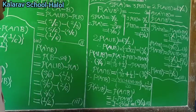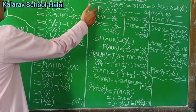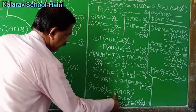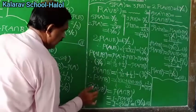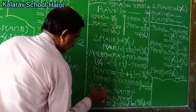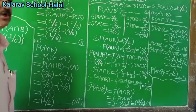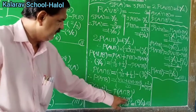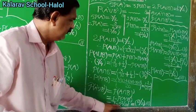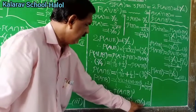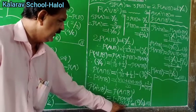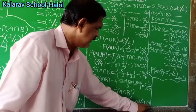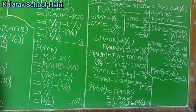The first required probability: P(A complement union B complement). By De Morgan's rule this equals P(A intersection B) complement, which is 1 minus P(A intersection B) = 1 minus 1/20 = 19/20. Answer number 1.